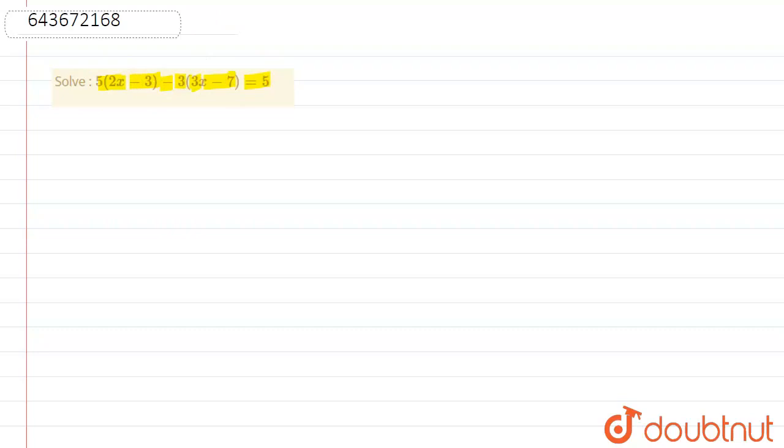So here we have to solve this expression. 5(2x - 3) - 3(3x - 7) = 5.